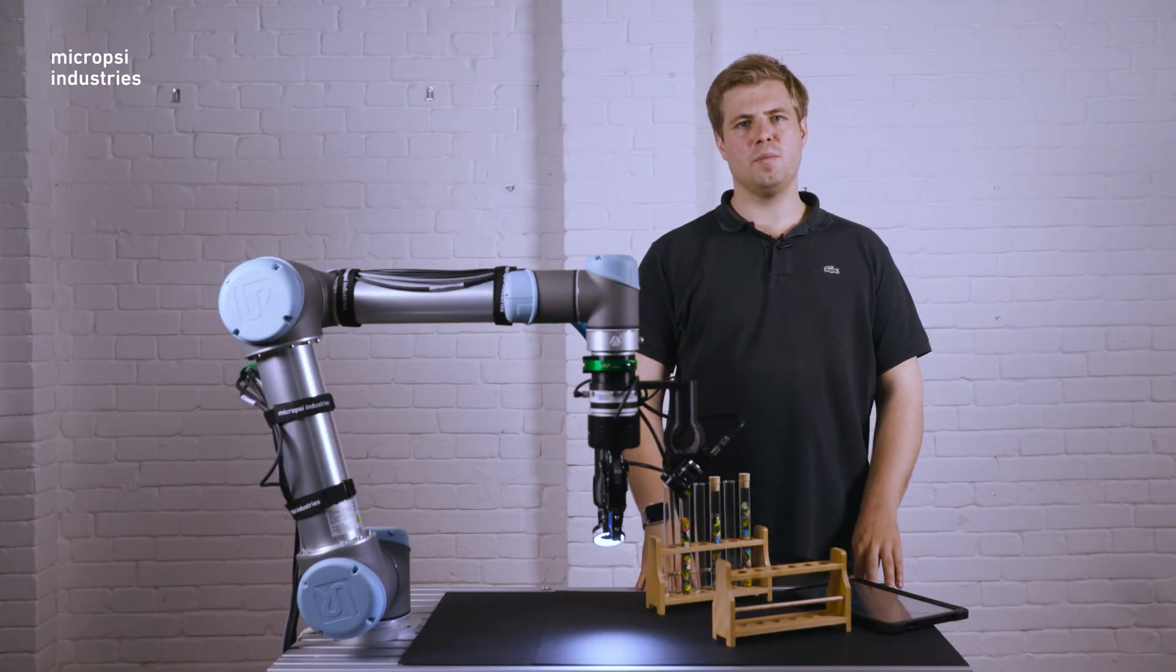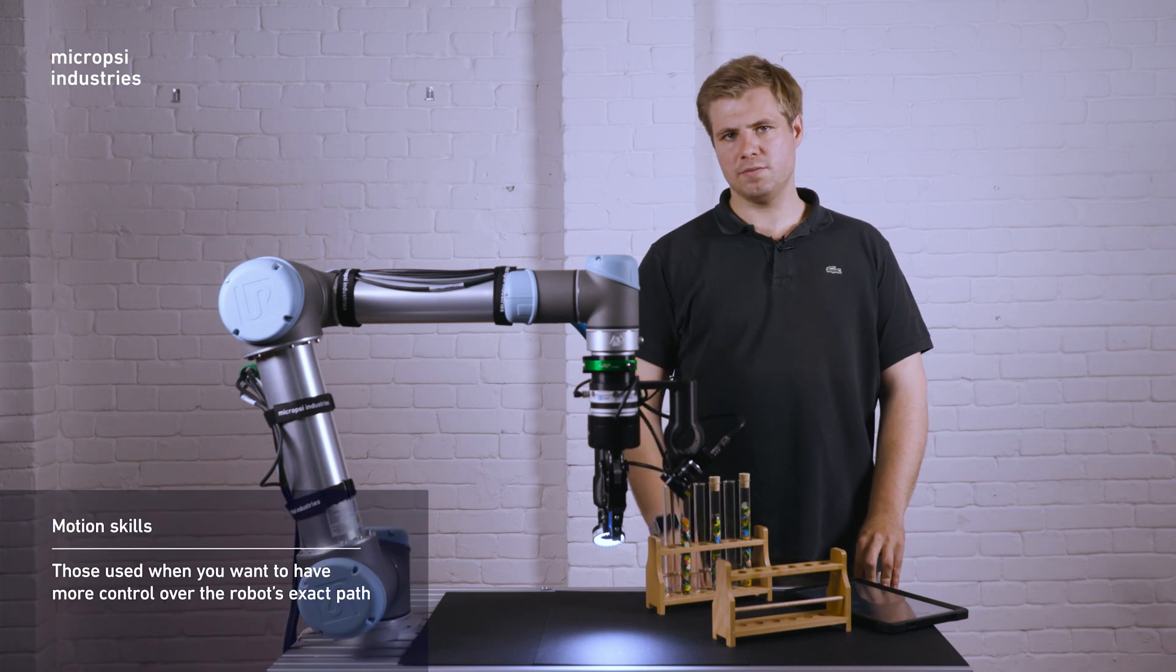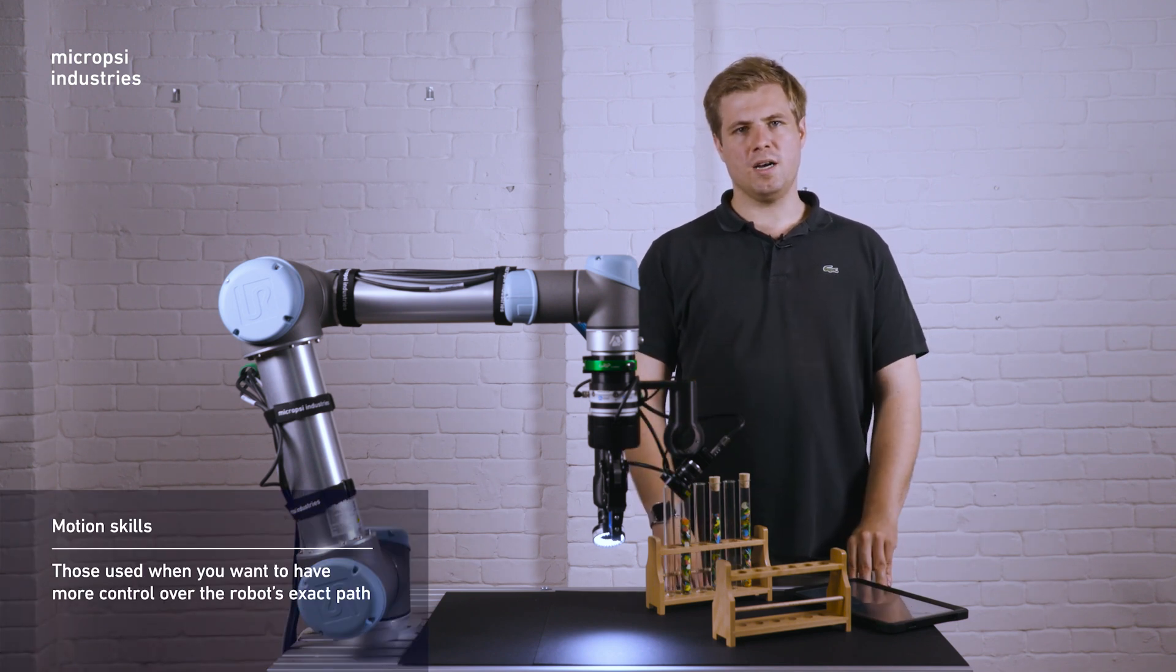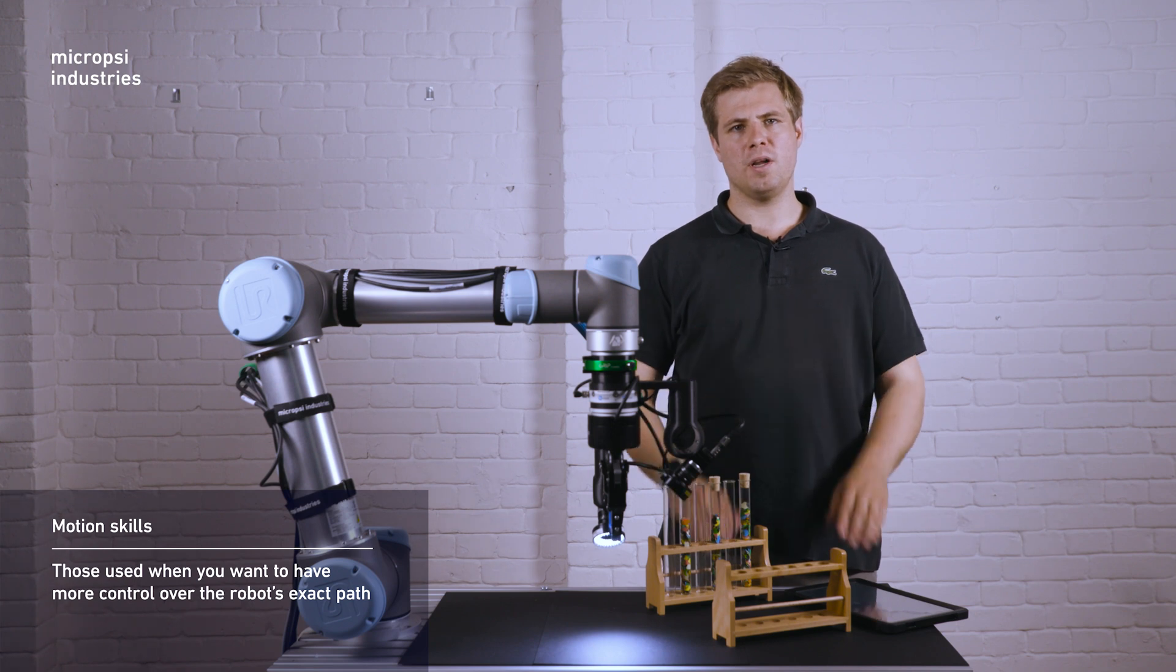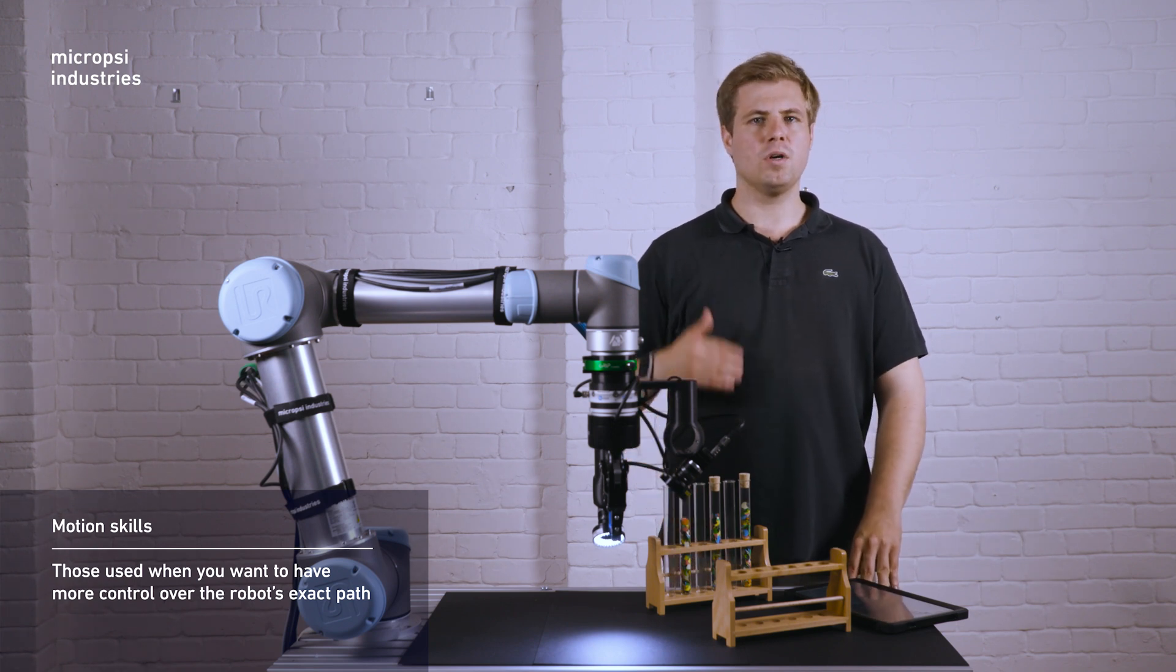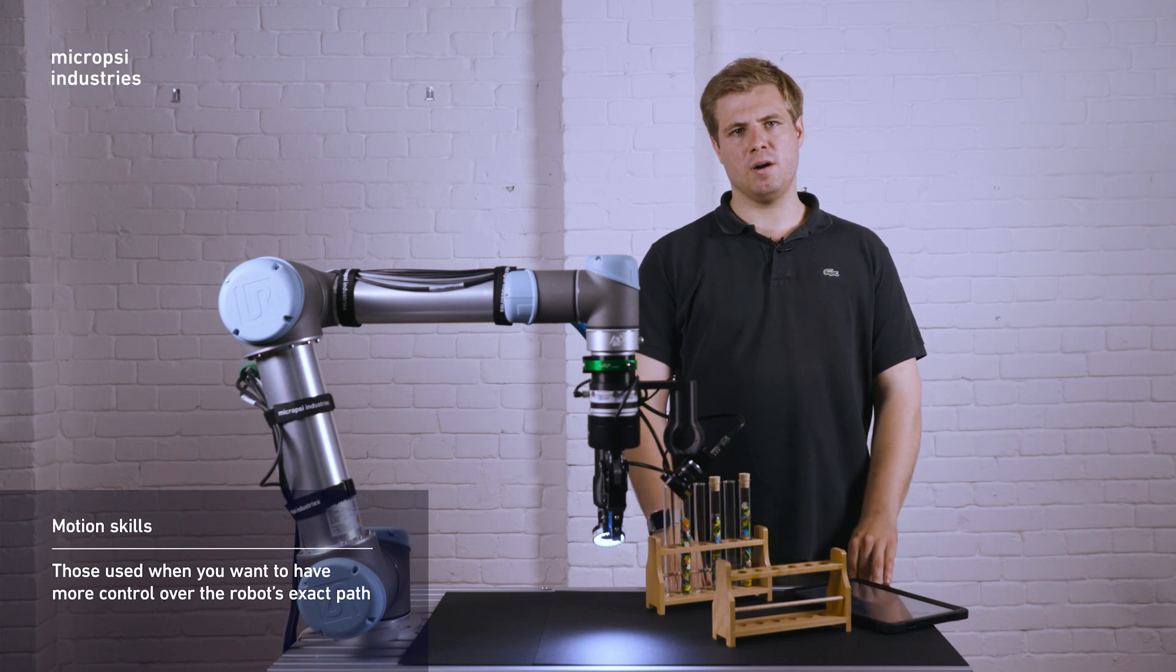The other type of Mirai skill is a motion skill. You use a motion skill for tasks that require more complex robot motions, when you want to have more control over the robot's exact path.